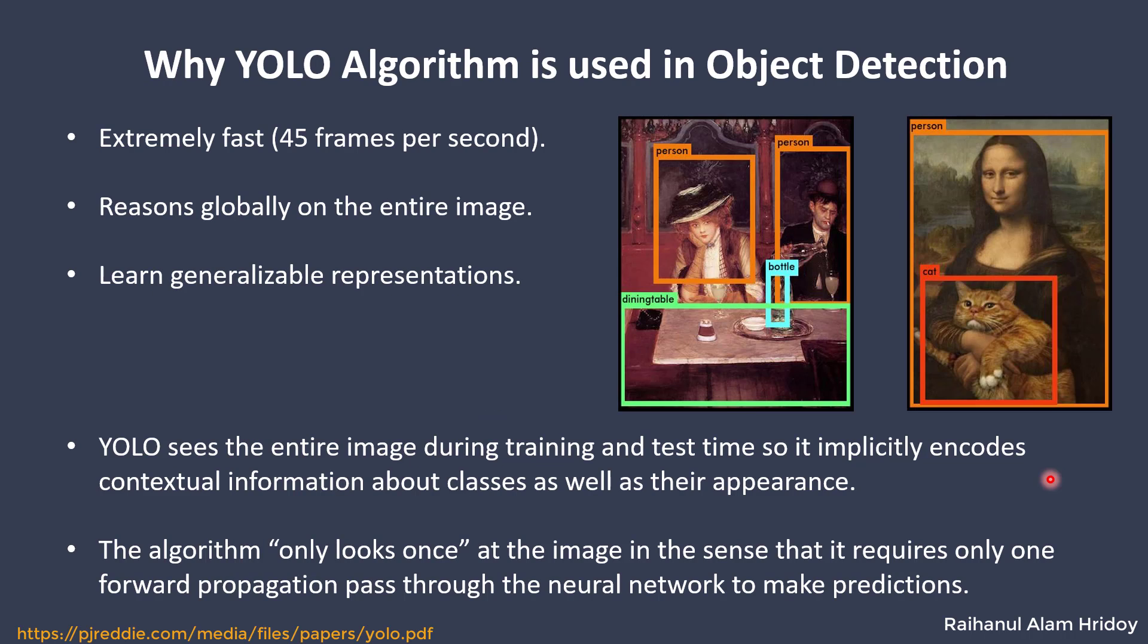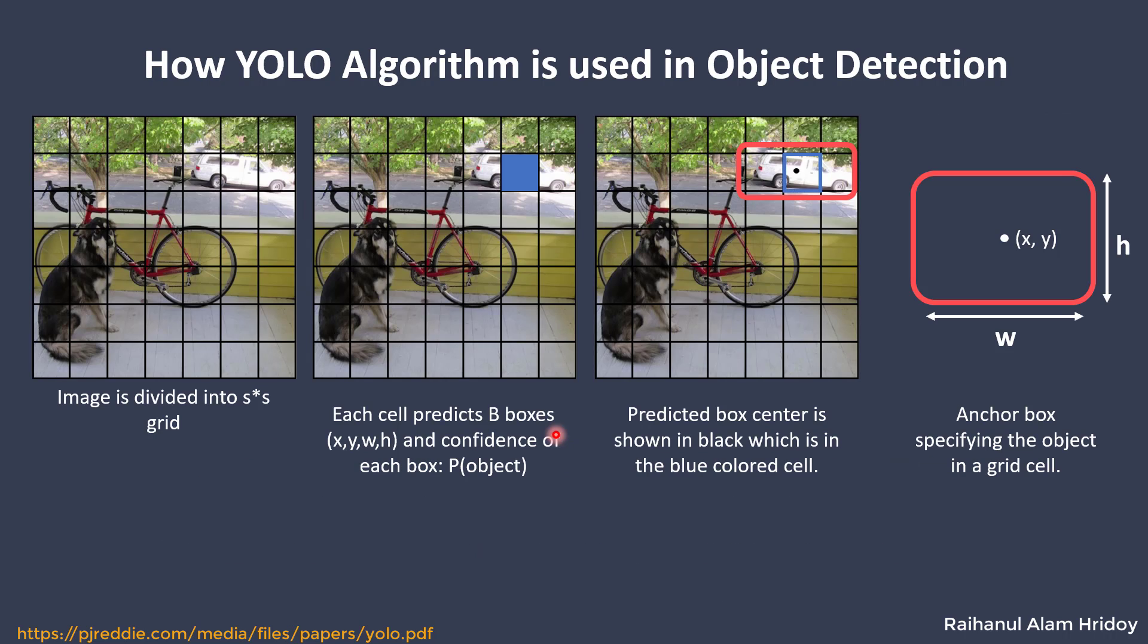Thank you Mahbub. Now I will discuss why YOLO algorithm is used in object detection. The main benefit of the YOLO algorithm is that it's highly accurate and extremely fast. YOLO sees the entire image during training and test time, so it implicitly encodes contextual information about classes as well as their appearance. It also gives great accuracy while predicting objects from paintings. Now let's discuss how this algorithm actually works.